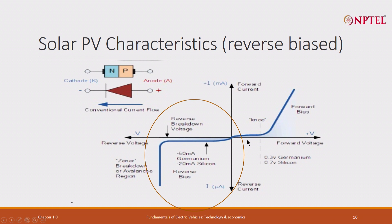This is called Zener breakdown. So this is the reverse current when there is a reverse voltage.